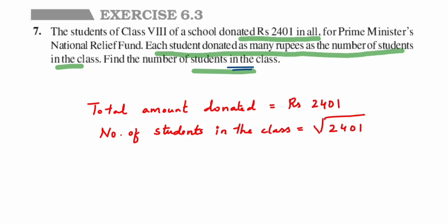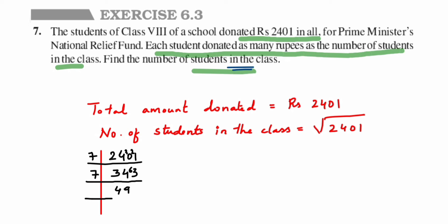2401 is an odd number — not divisible by 2, 3, or 5 — so I'll start with 7. Dividing 2401 by 7 gives 343. Dividing 343 by 7 gives 49. Dividing 49 by 7 gives 7, and 7 divided by 7 gives 1. So the prime factorization is complete.